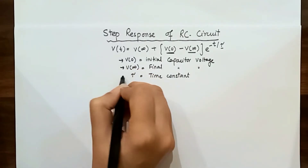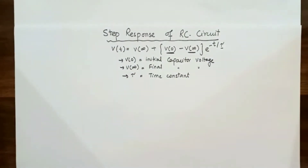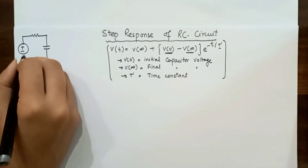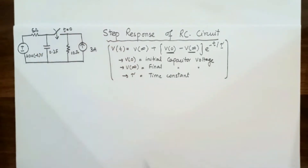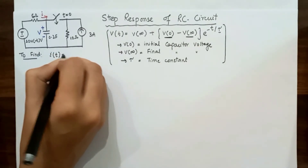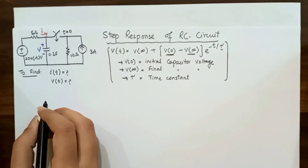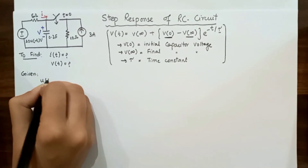We need to know these three values to find the step response of the RC circuit. Let us take an example and draw the circuit. The switch is closed when time equals zero, V is the voltage across the capacitor, and i is the current. What we need to find is the current i flowing at time t and V(t), the voltage across the capacitor. Some parameters are given, including u(-t).